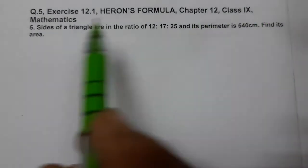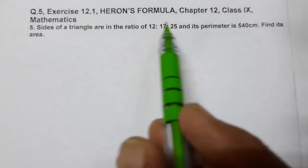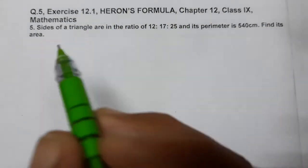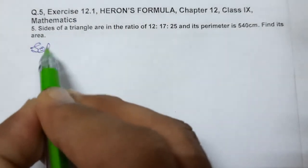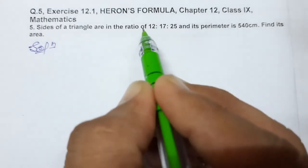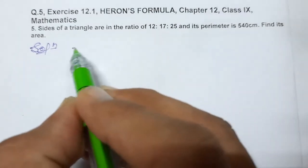Find its area. Sides ka ratio kya hai, 12 is to 17 is to 25. So let the sides are...